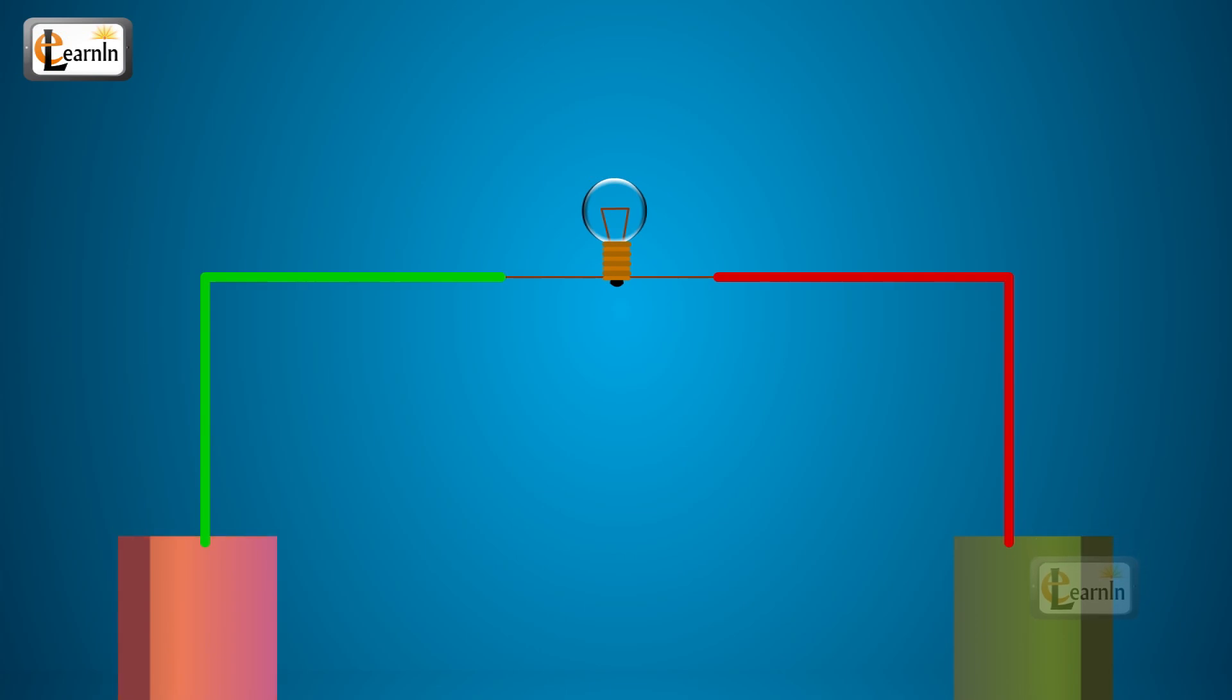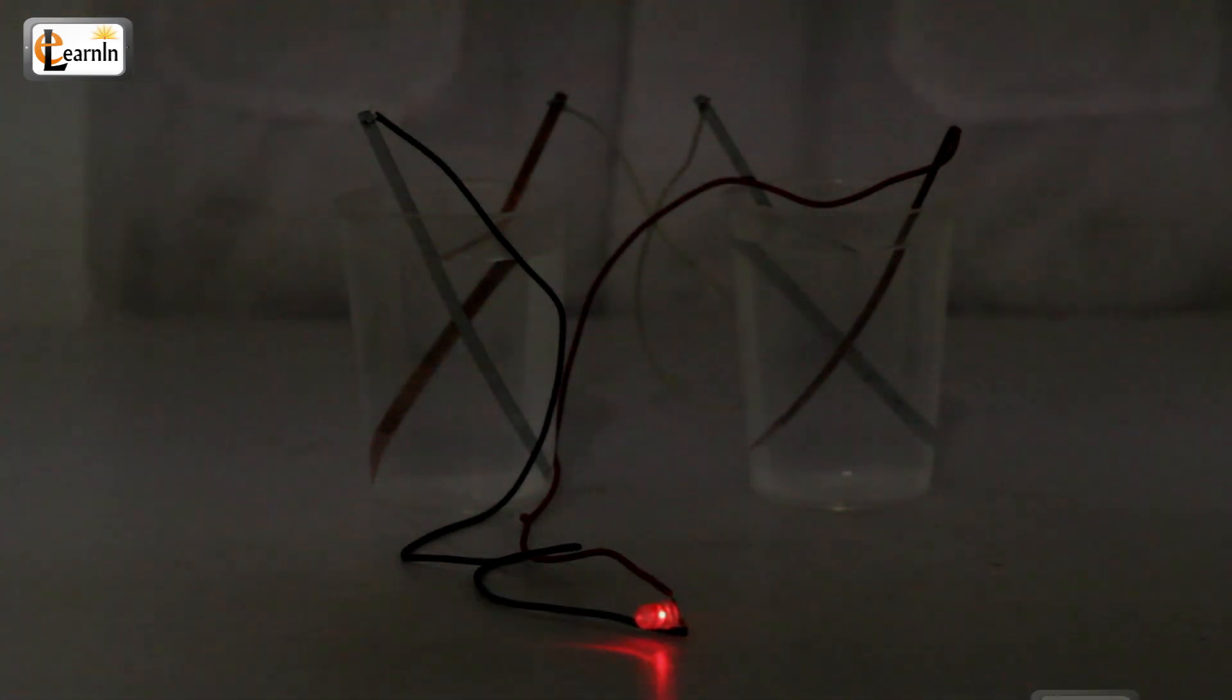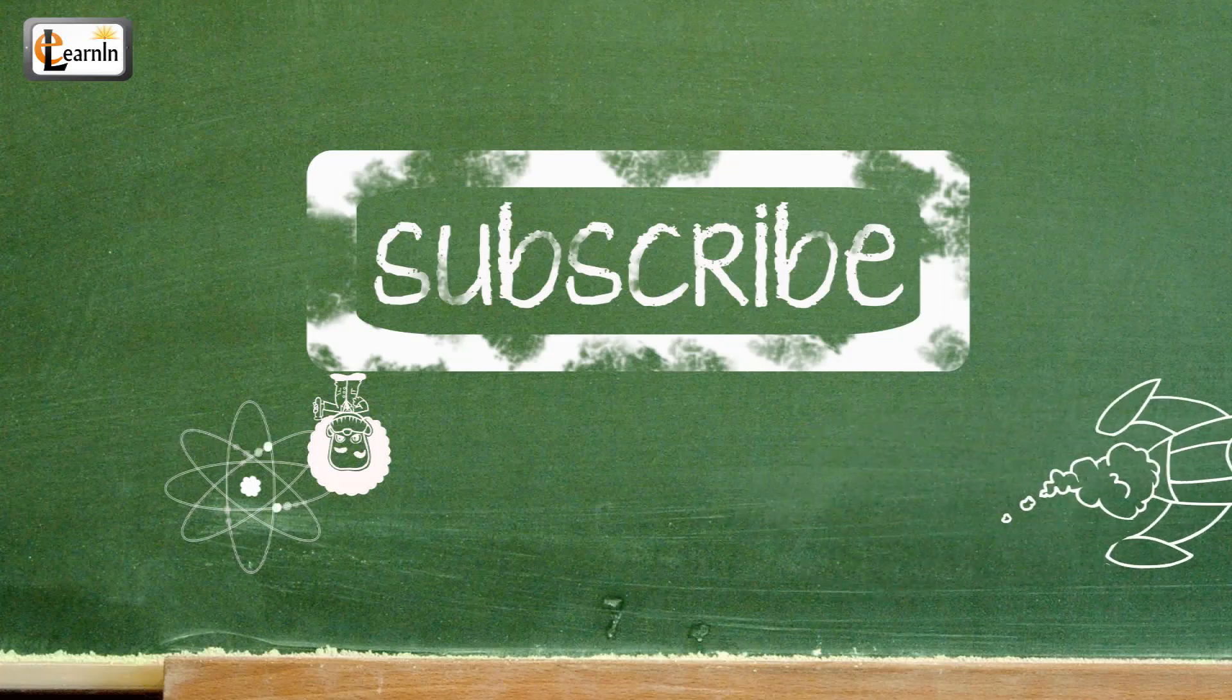The electrons then flow through that wire creating an electric current, so the LED glows. Thank you for watching and please subscribe to our channel.